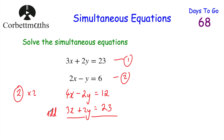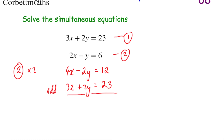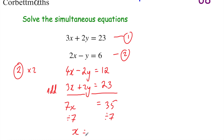I write the word 'add' rather than a plus or minus sign here. So adding the two equations: 4x plus 3x equals 7x. Minus 2y plus 2y equals 0, so they cancel out. And 12 plus 23 equals 35. So we've got 7x equals 35. We can now divide both sides by 7, giving us x equals 35 divided by 7, which equals 5.